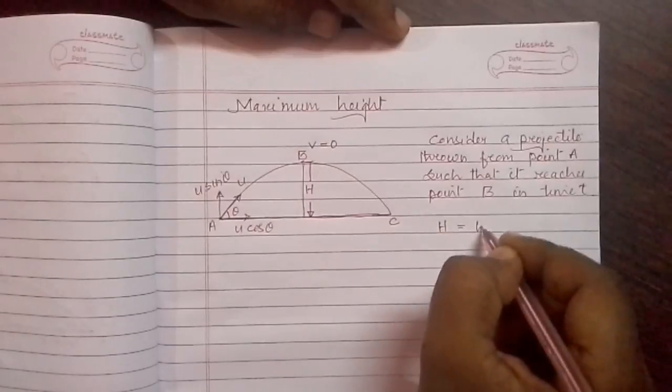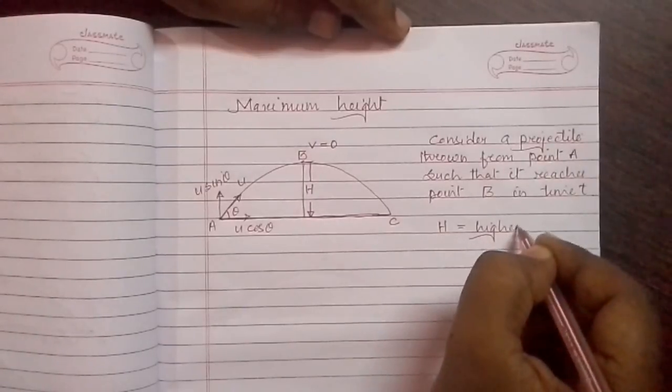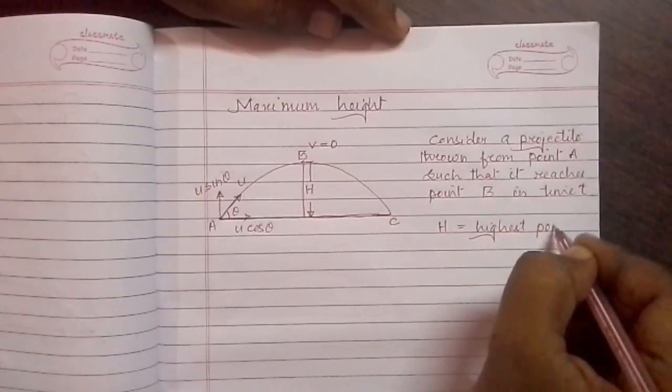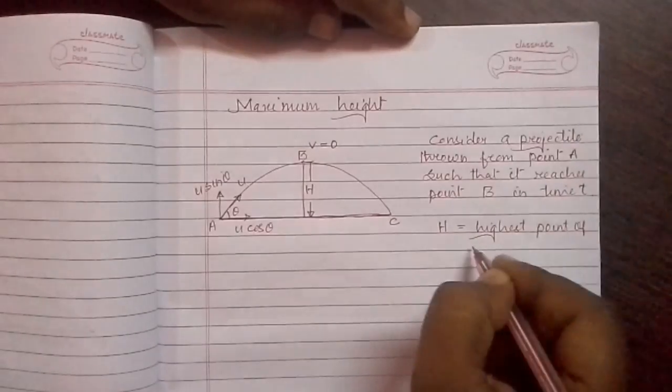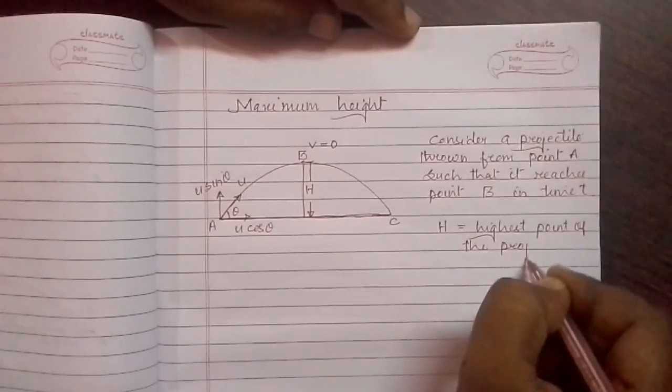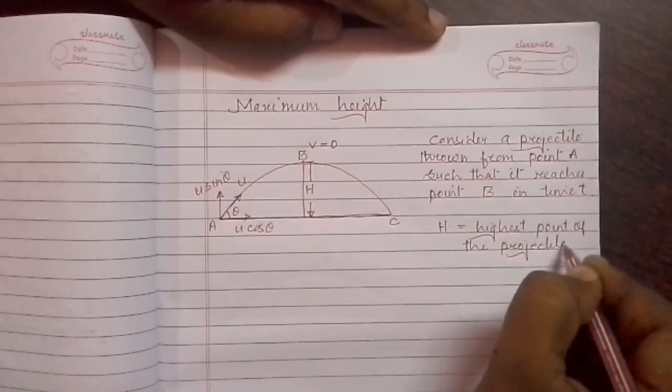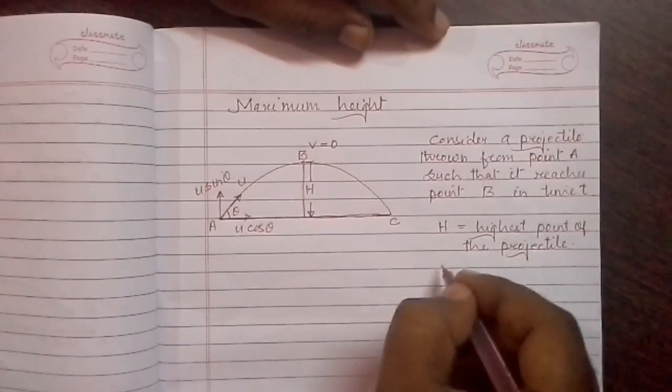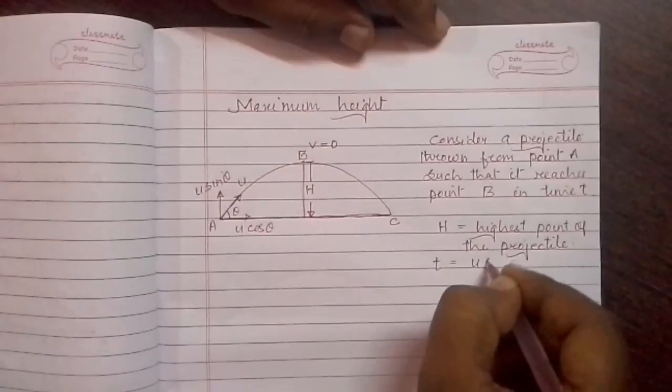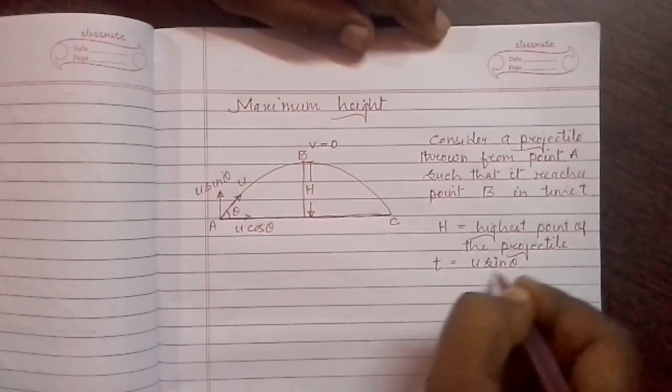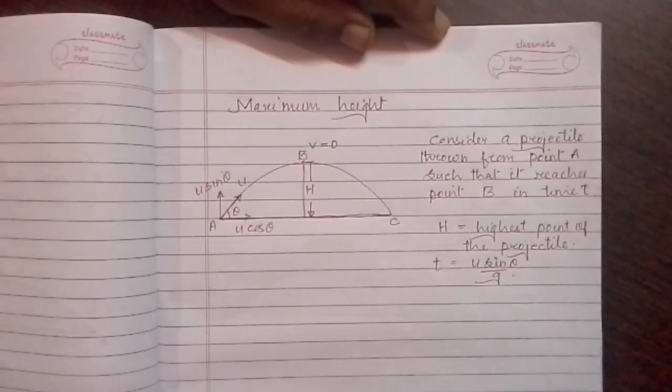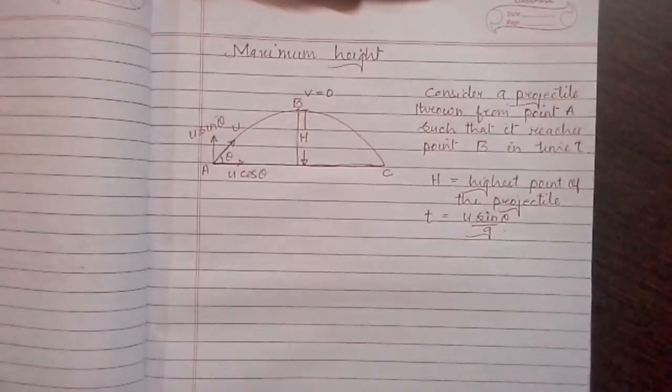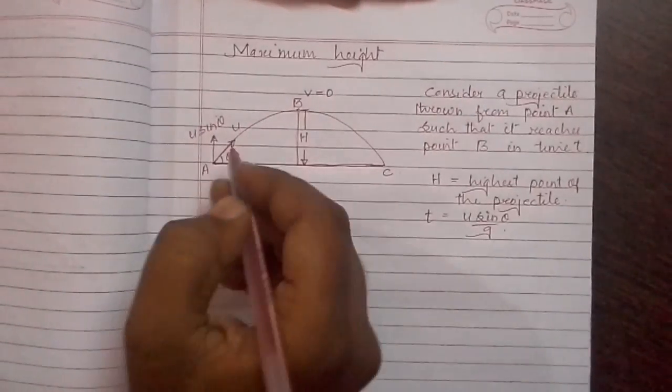So h is the highest point of the projectile. We also know that t equals u sin theta by g, which we derived in the previous derivations. When it is thrown from point A, u sin theta component is the vertical velocity.